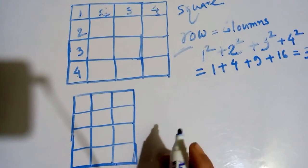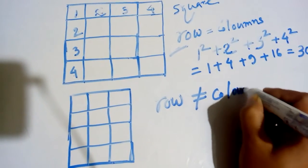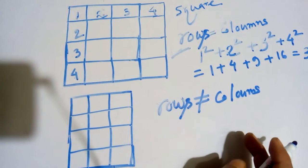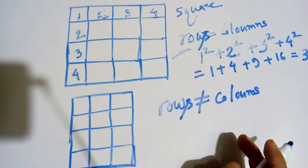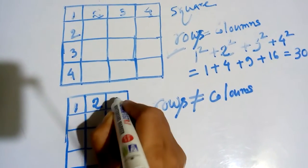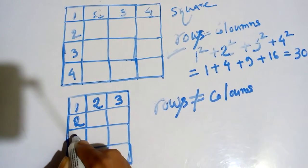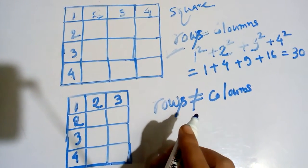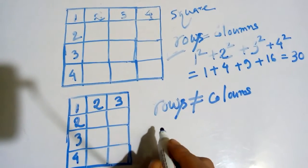In the second problem, the number of rows is not equal to the number of columns. When rows do not equal columns, we use a different procedure. We first mark the cells: cell number one, cell number two, cell number three — and in the other direction: cell number one, two, three, and four. This is a 4-row by 3-column grid.